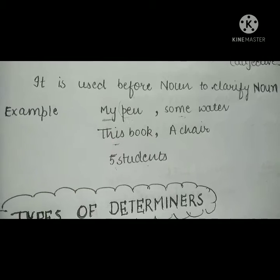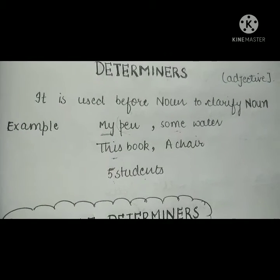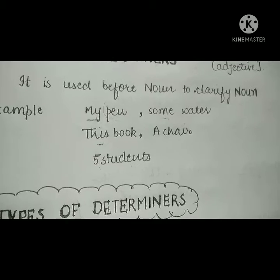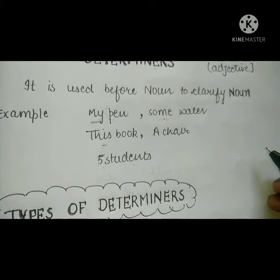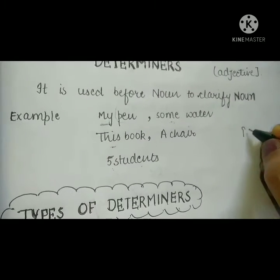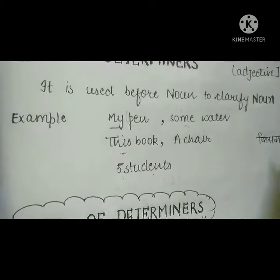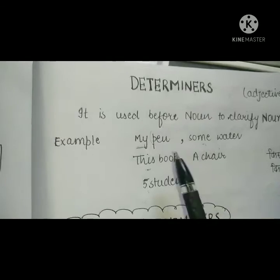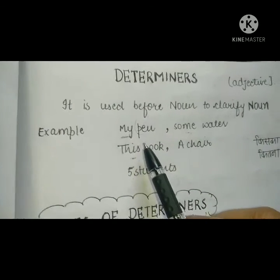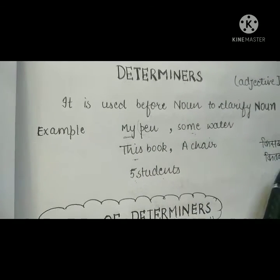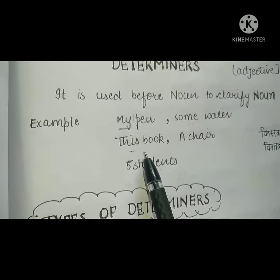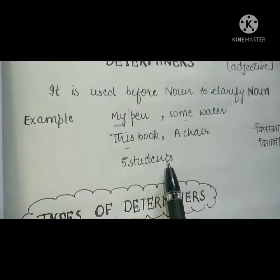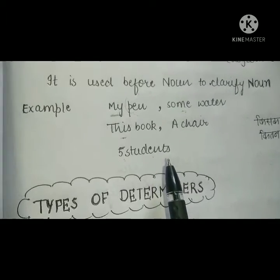If you have to remember this topic, you will have to remember two things: whose and how many? My pen — whose pen? Some water — how many? This book — whose and how many? Five students — how many students. So these two questions determine our determiners.